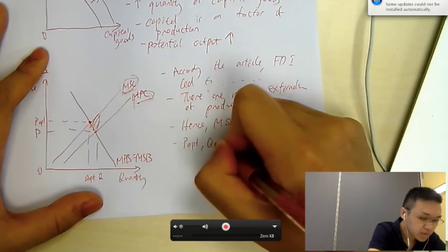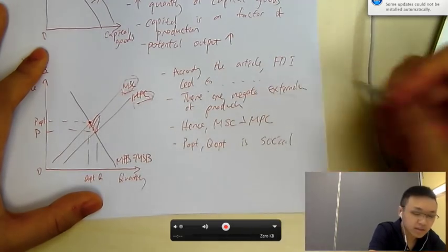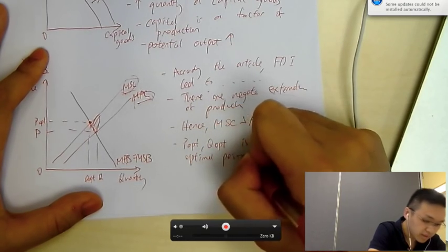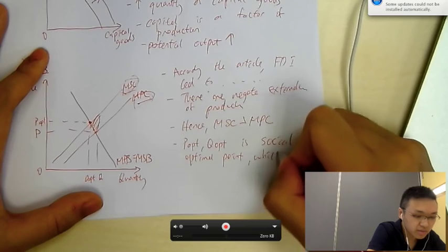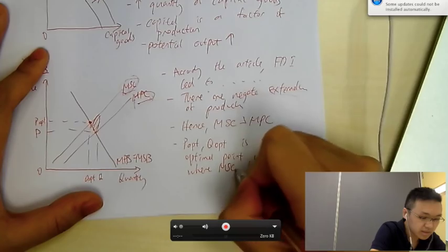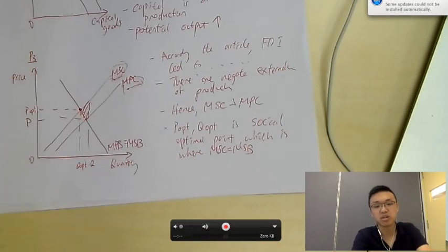So, Popt, Qopt is social optimal point, right? It's a social optimal point. Which is where... Where does it occur? Which is where MSC equals MSB. MSC equals MSB, Popt, Qopt, okay?